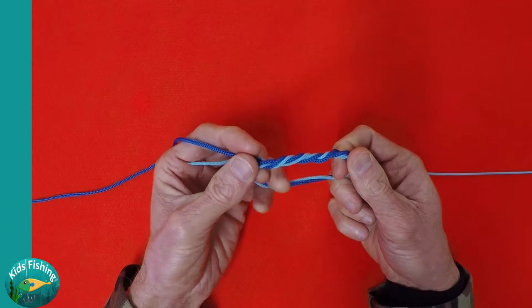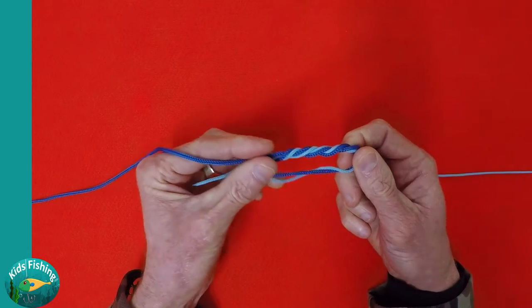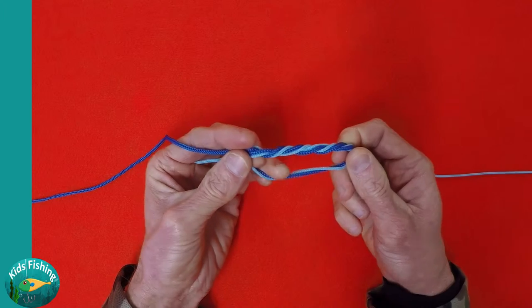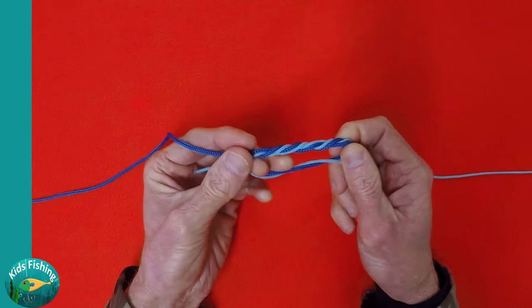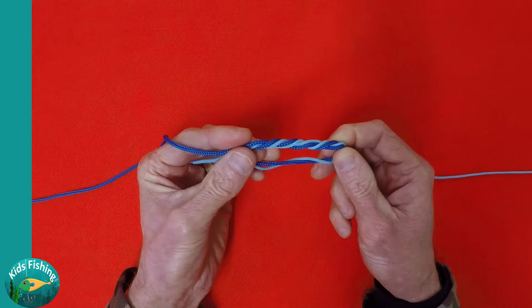If you're using braid, you may need to do five to seven wraps and you probably will need to double over the braid as well so that it doesn't actually cut through the monofilament or the fluorocarbon.